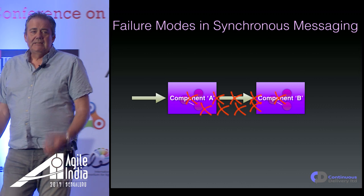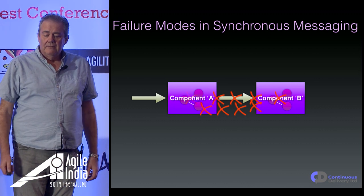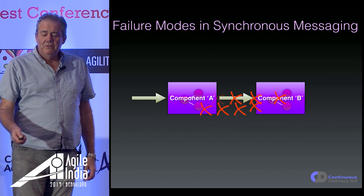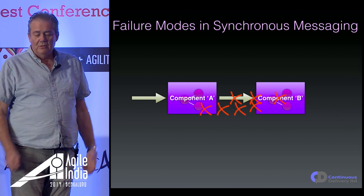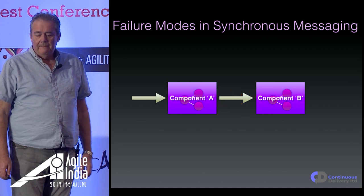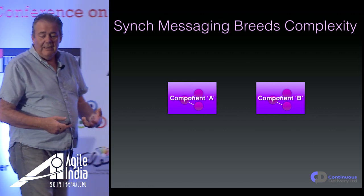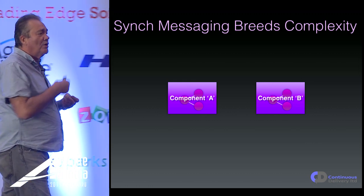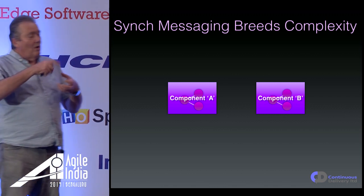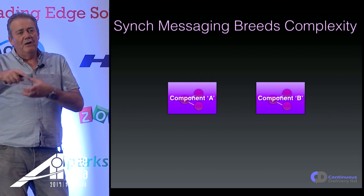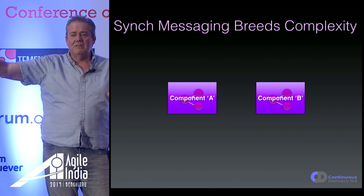The problem is that in reality, component A only knows about some of those failure cases — it can only detect some of them, not all. It can only know about a bug in its own right and a bug in its ability to communicate with the other thing. So for everything else, we've got to add complicated coding to cope with failures we can't detect somewhere else in this distributed system.